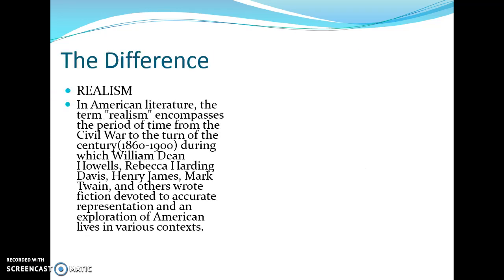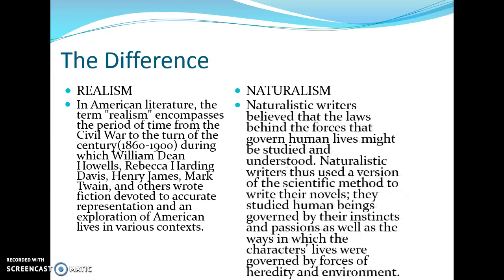The difference between realism and naturalism: realism is literature from 1860 to 1900 written by a very different group of Americans about life in America from different perspectives. Naturalism includes writers who believe that there are laws that govern us as humans, and because of those laws we can be studied, understood, and our behavior can be understood. You see behavioral psychology start to rise at this time.